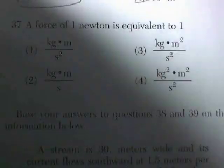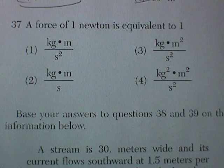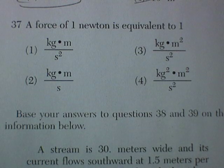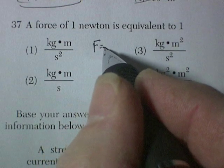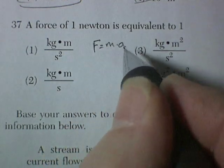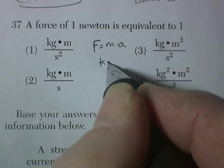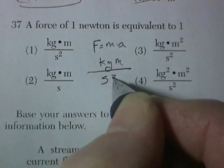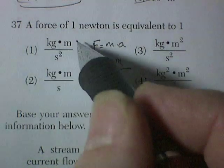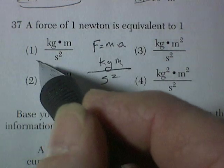Question 37. A force of 1 newton is equivalent to. Well, the thing to do would be to write the equation for force. Force is equal to mass times acceleration. Mass would be kilograms. Acceleration would be meters per second squared. So, kilogram meters per second squared. That looks like the right one.